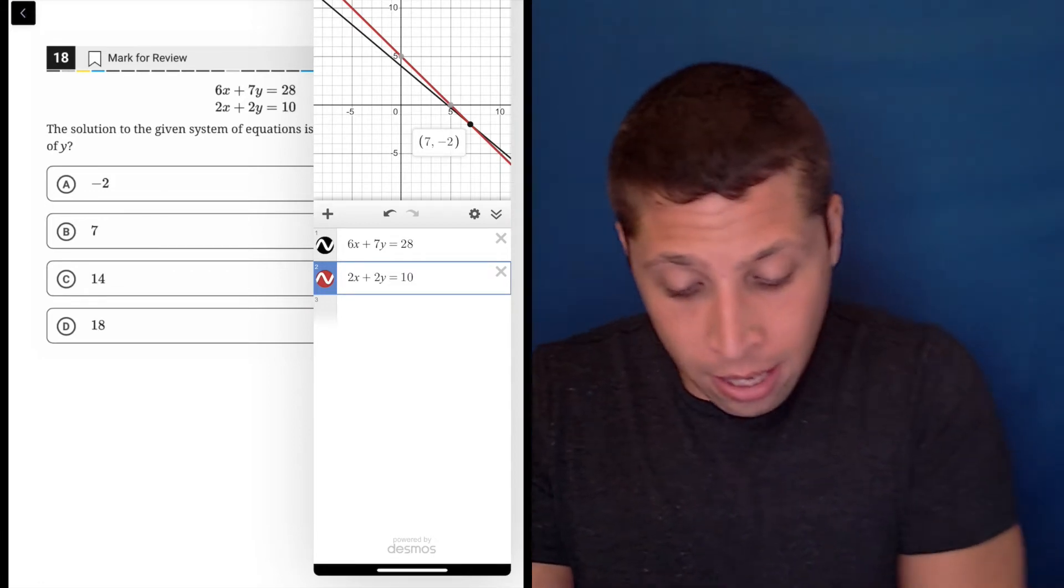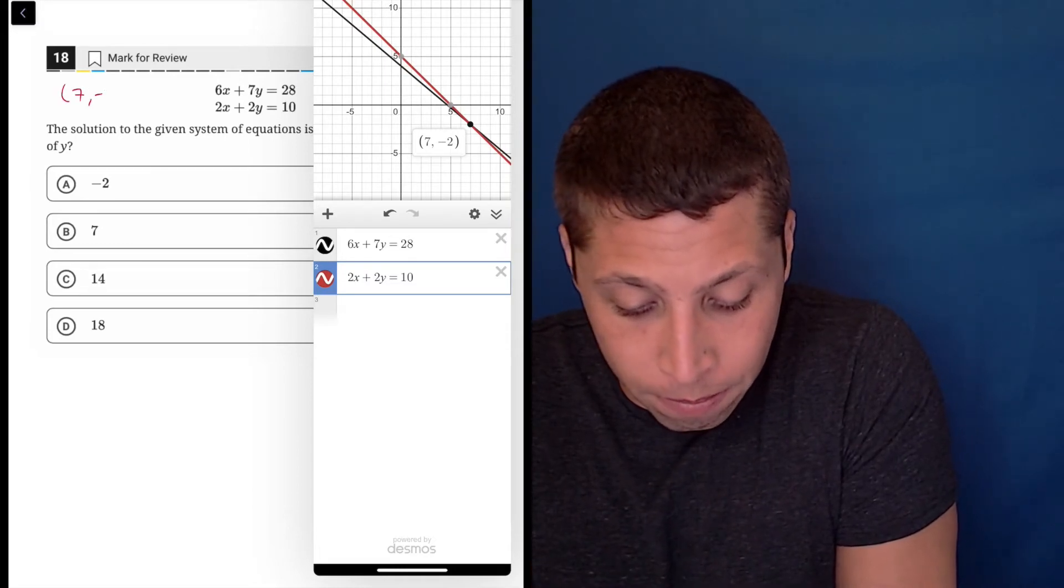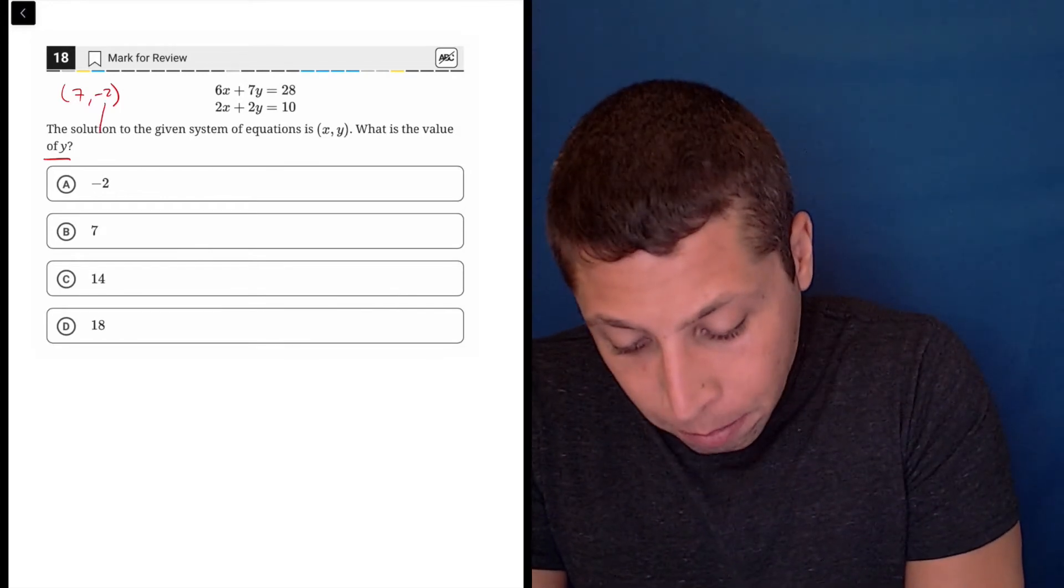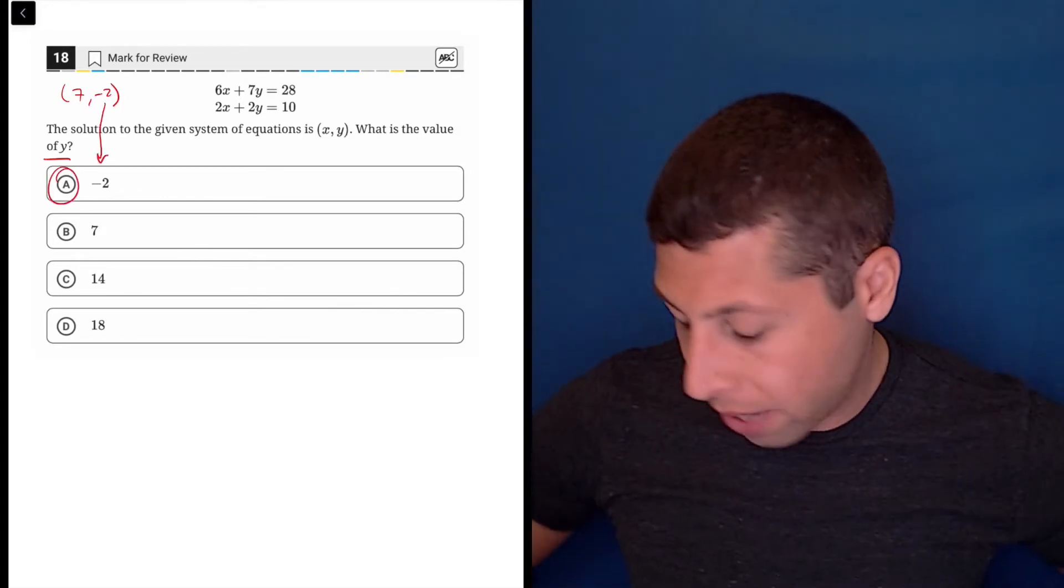So in this case, it is 7, negative 2. I'm going to write that down. And what do they want from us? Well, they want the y value. So we've got to be careful. That's going to be the negative 2. So that means choice A is the answer.